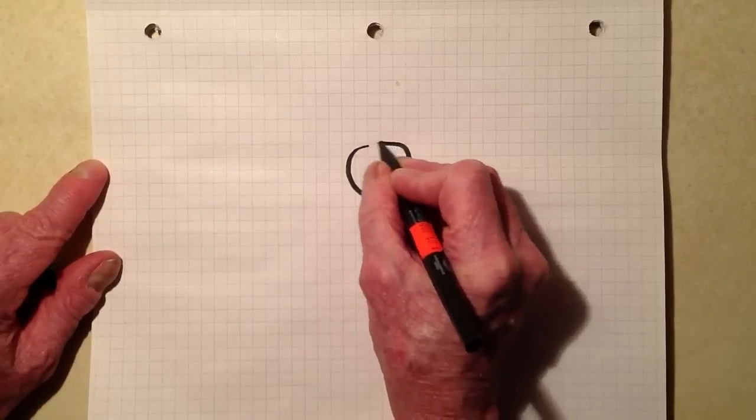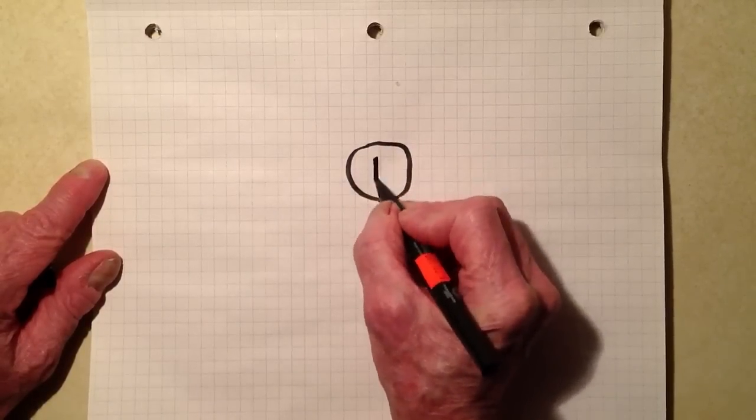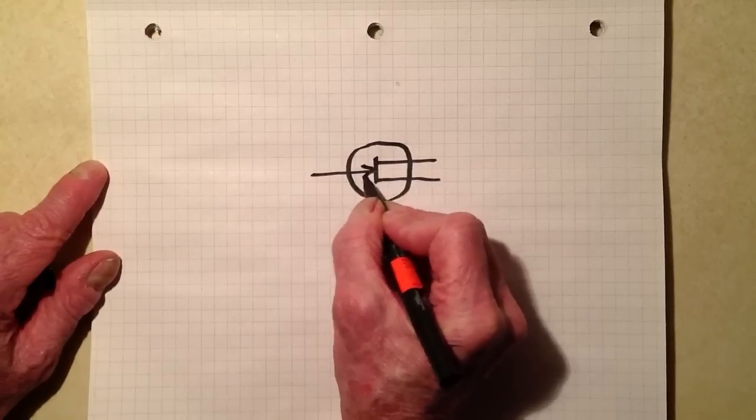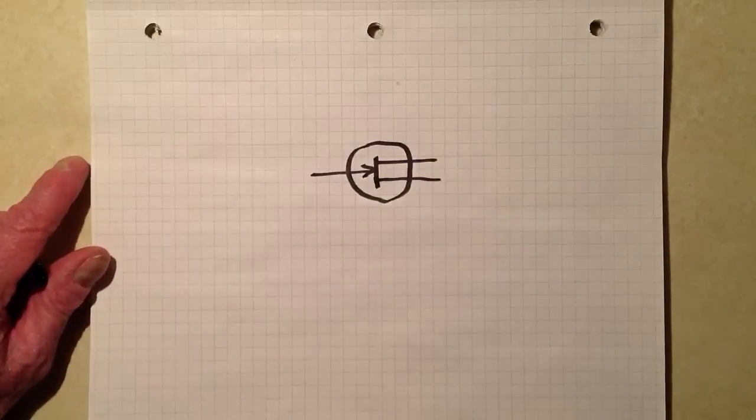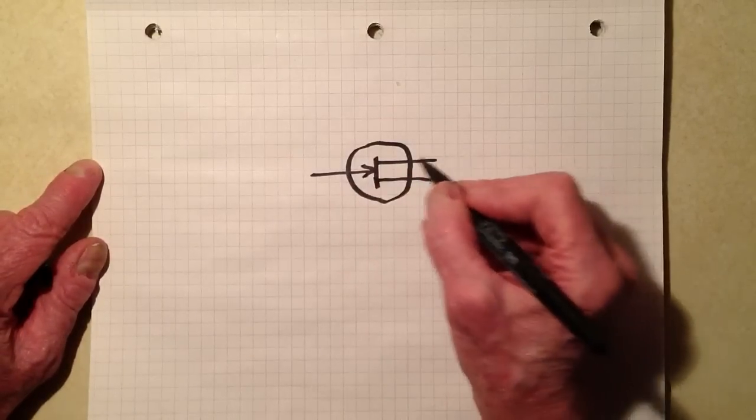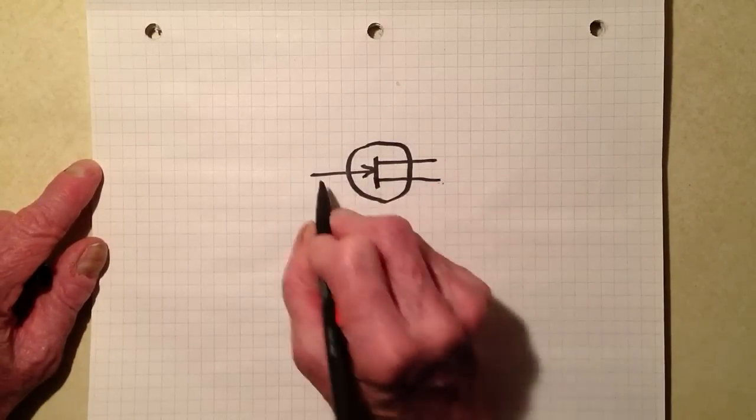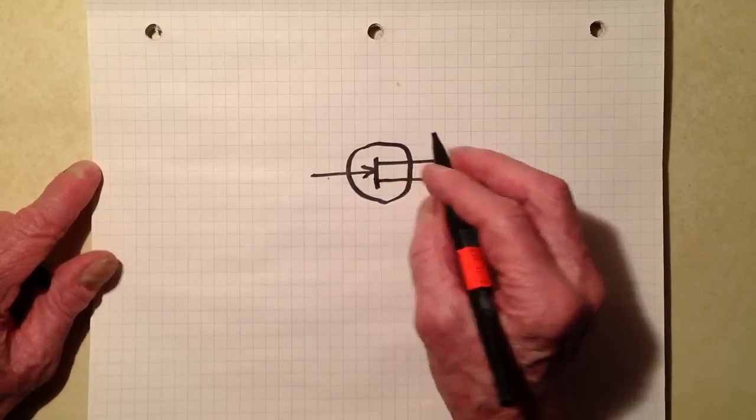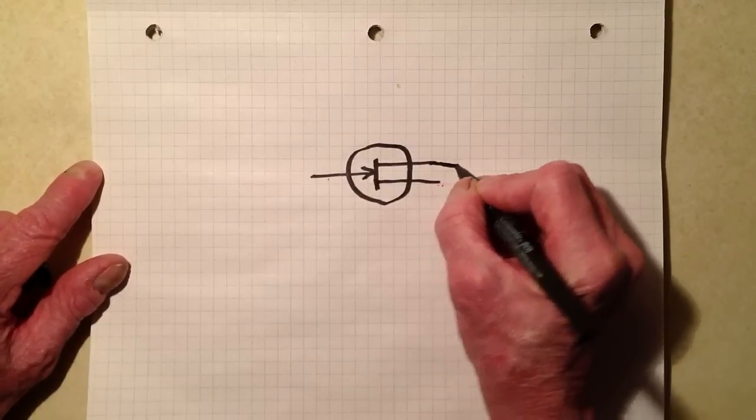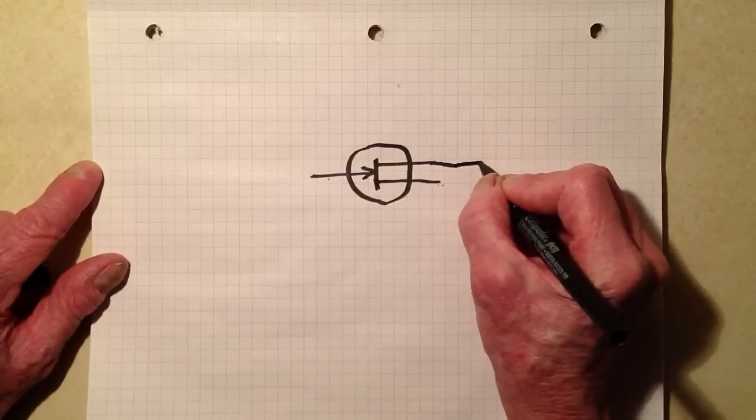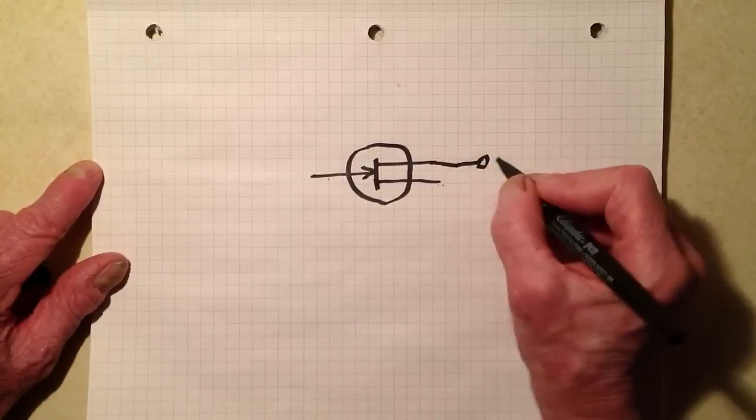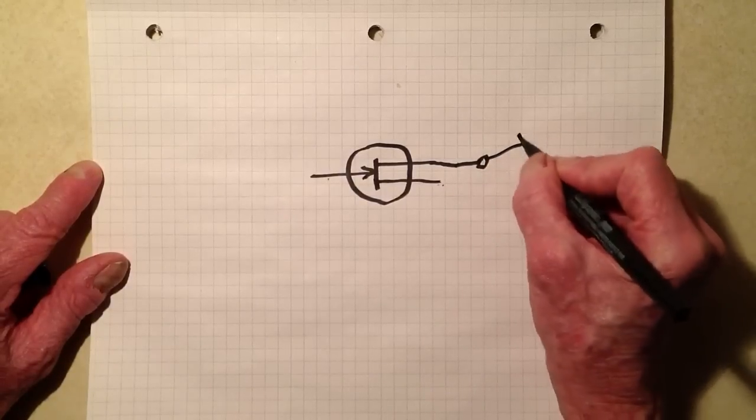As I draw it, I will explain how the currents and signals flow through it. It uses an N-channel junction field effect transistor. There is the source, the gate, and the drain. Source, gate, drain.